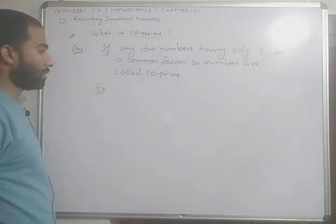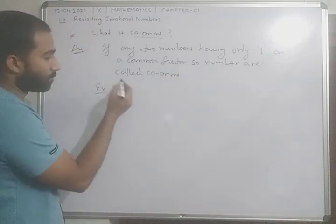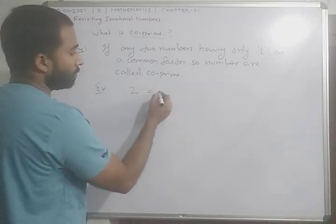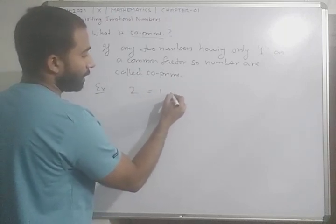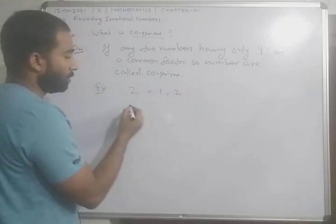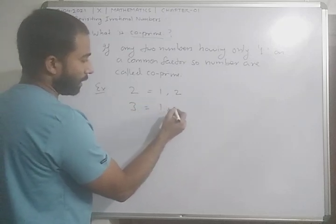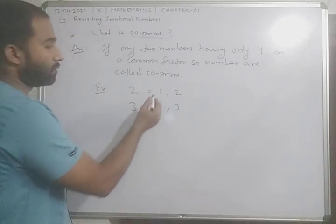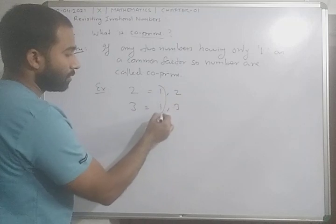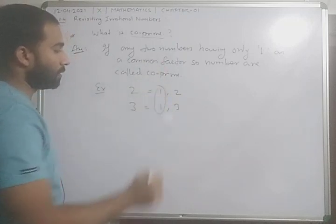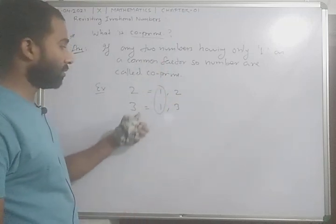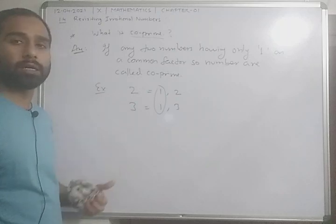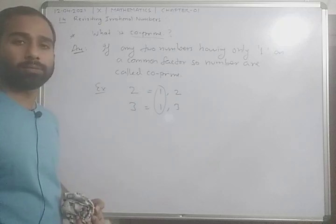We can see some examples. Suppose the factors of 2 are 1 and 2, and the factors of 3 are 1 and 3. In both numbers, you can see only 1 as a common factor. Therefore, we can say 2 and 3 are co-primes.